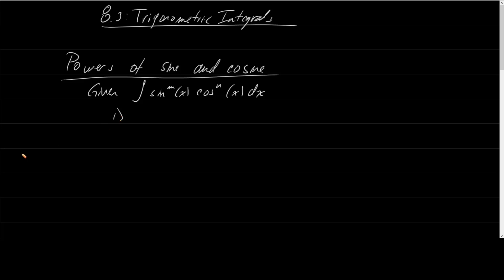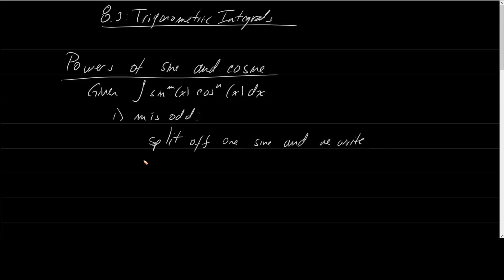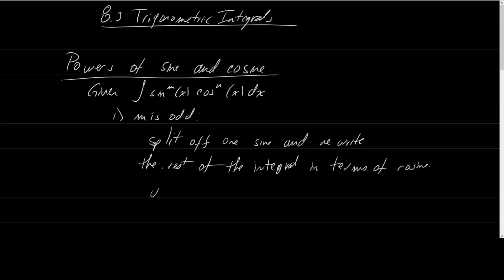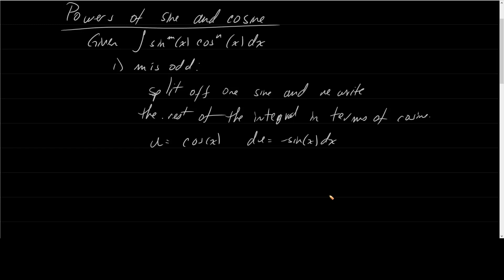The first case is that m is odd — that is the power of sine. If m is odd, we're going to split off one sine and write the rest of the integral in terms of cosine. At that point, u is going to be cosine, and du is negative sine of x dx.